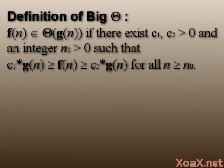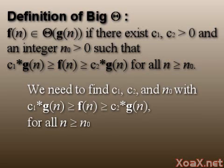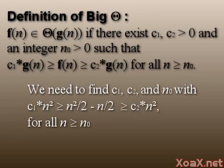Now in order to show that the algorithm is big theta of n², we need to find positive constants c₁ and c₂, and a positive integer n₀ such that c₁ times g(n) is greater than or equal to f(n), which is greater than or equal to c₂ times g(n), or c₁ times n² is greater than or equal to n² divided by 2 minus n divided by 2, which is greater than or equal to c₂ times n², for all values of n greater than or equal to n₀.